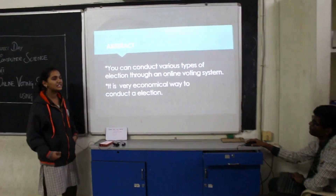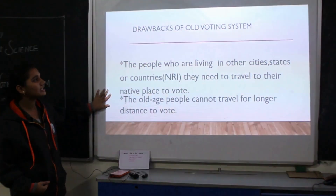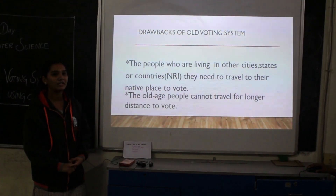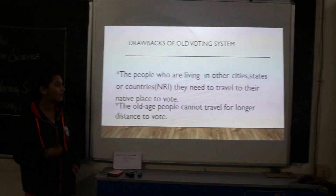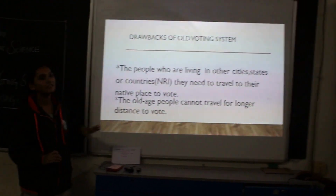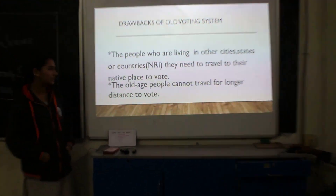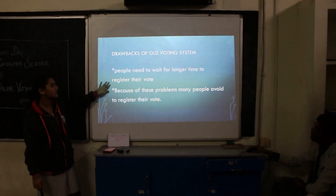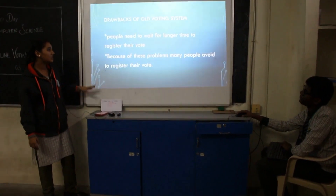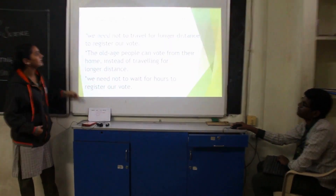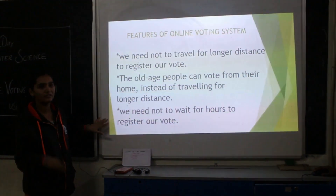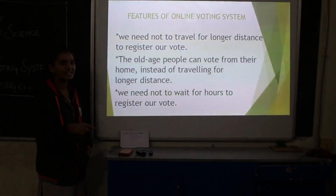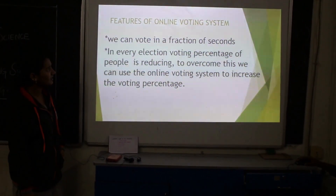The drawback of the current electronic voting system is that people have to travel long distances and wait for hours just to vote. Old age people cannot vote because they have to travel for a long time, and many people do not register their votes because of this problem. But with the Online Voting System, old age people can vote from their own house, and we do not need to wait for hours just to cast our votes and get the result — we can vote in a fraction of seconds.